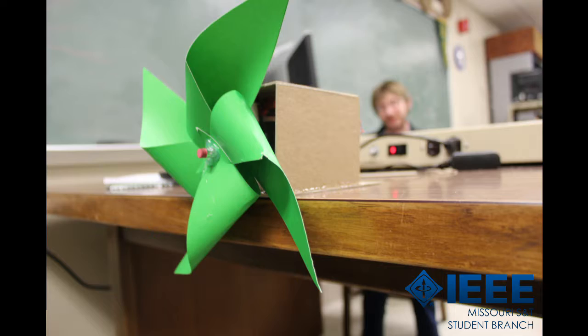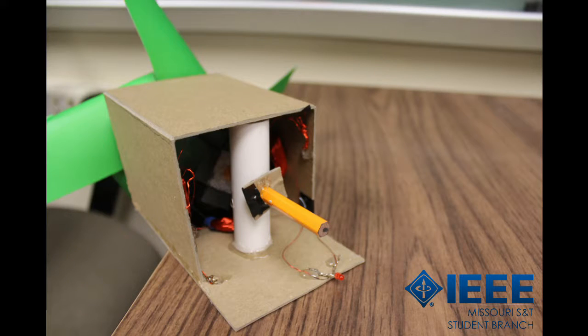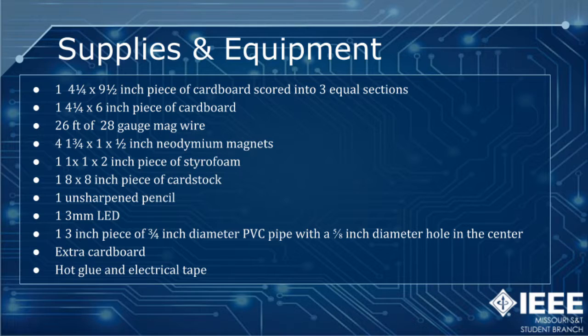For this workshop, you'll need the following materials: one 4.25 by 9.5 inch piece of cardboard scored into three equal sections, one 4.25 by 6 inch piece of cardboard, 26 feet of 28 gauge mag wire, and four 1.75 by 1 by 0.5 inch neodymium magnets.